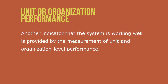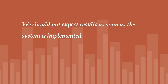A unit-level and organizational-level performance assessment is also important. This is another indicator that the system is working well and provides measurement of unit and organizational level performance. Such performance indicators as customer satisfaction within specific units might take some time to be reflected in the organization. We should not expect results as soon as the system is implemented — we should start to see some tangible results at the unit level a few months after a system is in place.